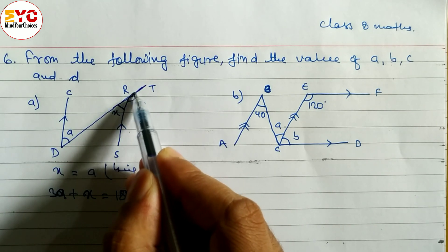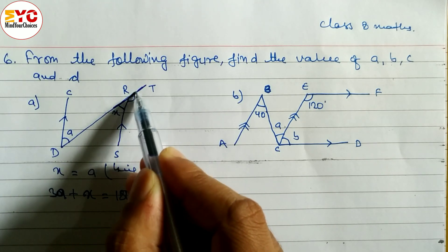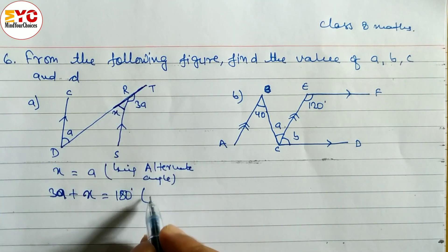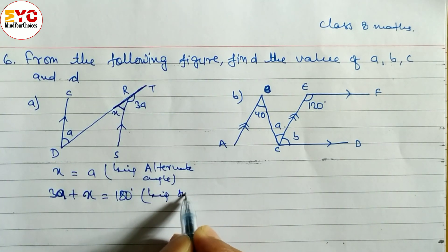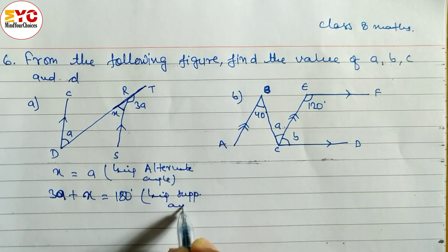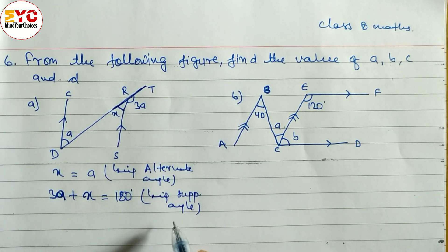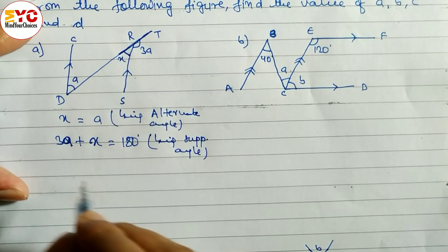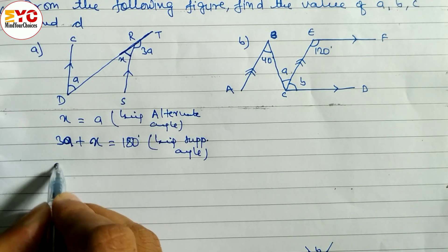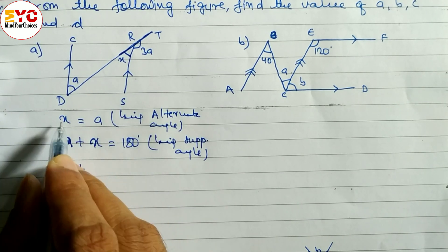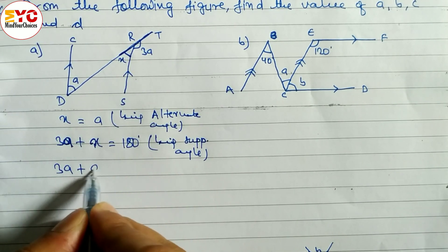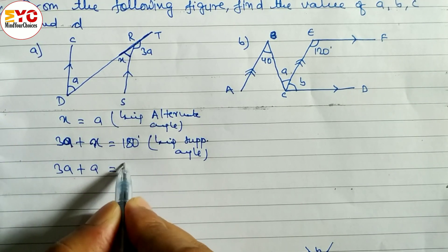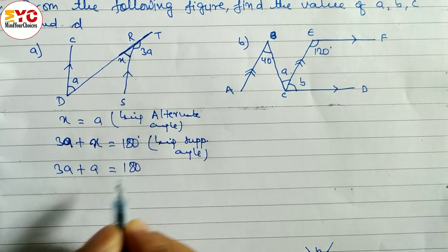3a plus a is equal to 180 degrees, being supplementary angle — or being straight line, or being linear pair. Now, 3a: what is the value of x? x is equal to a. So in the place of x we can write a. So 3a plus a is equal to 180 degrees.